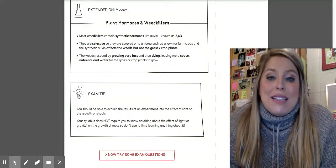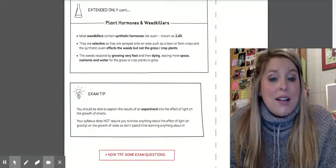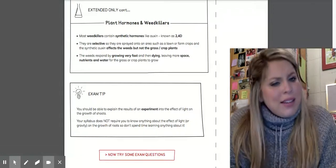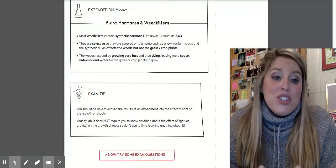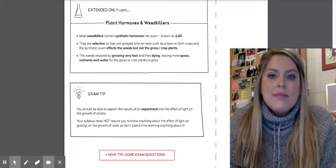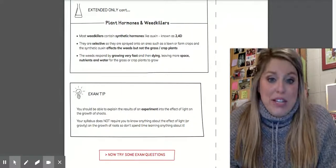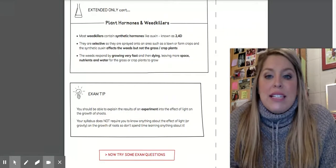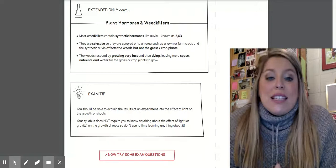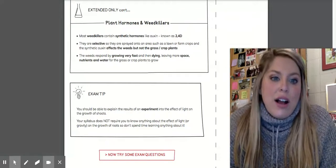Most weed killers contain synthetic hormones like auxins. And the most popular one that we discuss in our book is 2,4D. It's like, why am I talking about this? It's so specific. But it's shown up two years ago on an end-of-the-year exam. So it's just important I even point out the tiniest little pieces of information for y'all. These are selective. They're sprayed onto an area such as a lawn or farm crops.